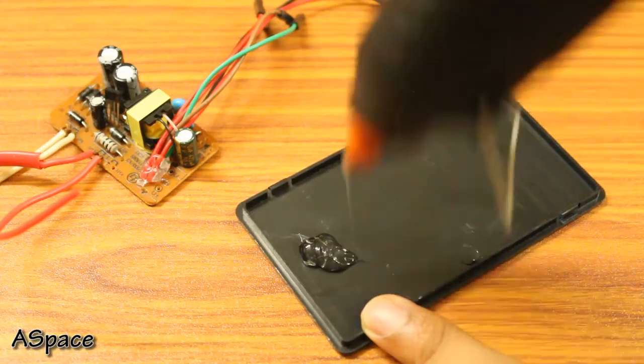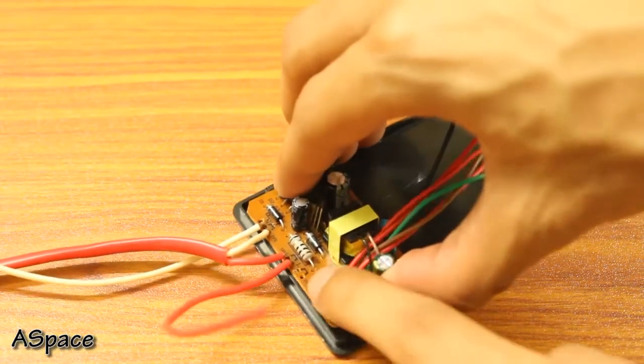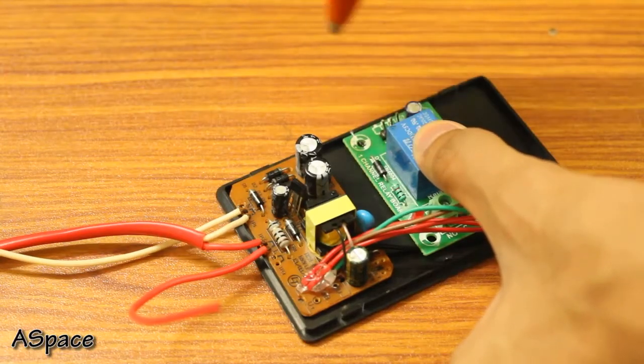Then I glued the module using some hot glue, followed by the relay module keeping a distance of 1.5cm in between for the mains switch to sit.